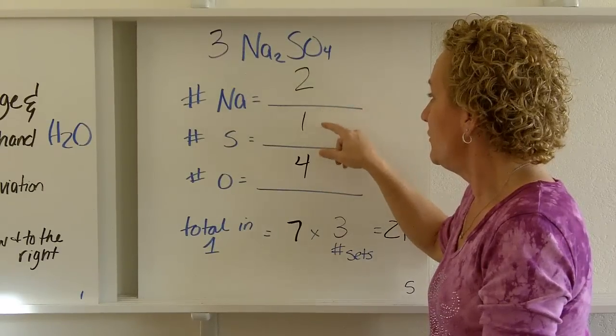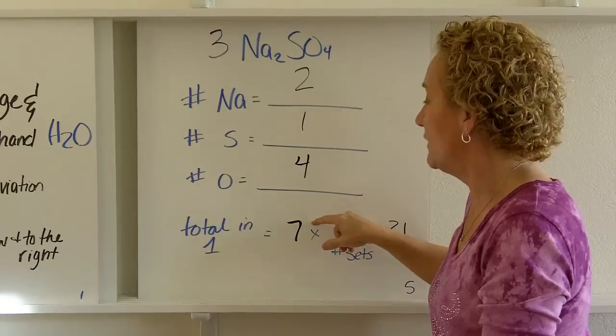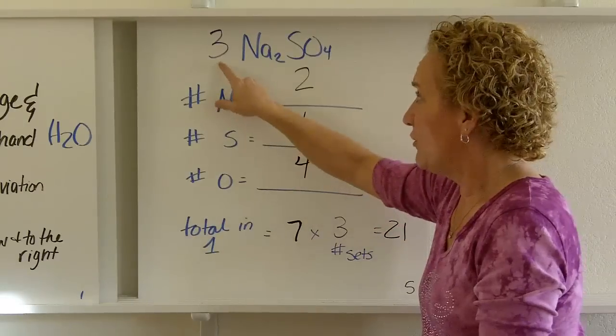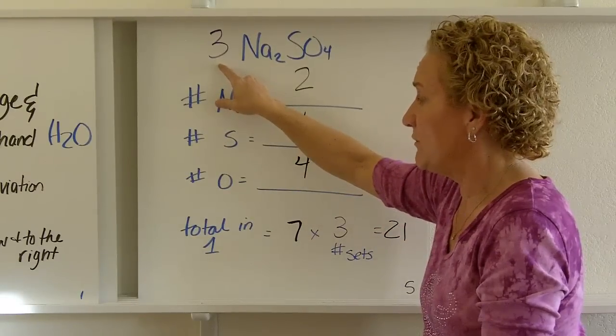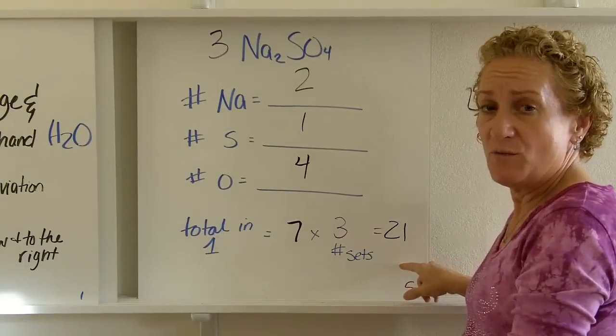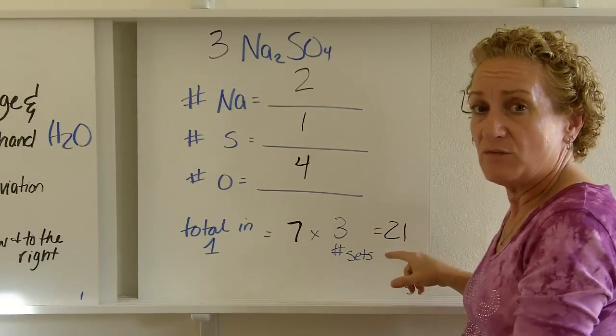So we have 2, 3, plus 4, makes 7 all together. 7 atoms in one of those. But our coefficient tells us we have 3 of those. So if there's 7 in 1, there must be 21 in 3.